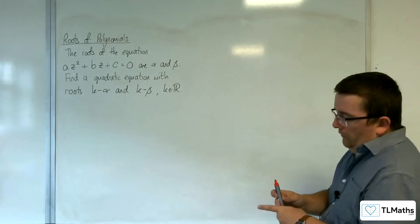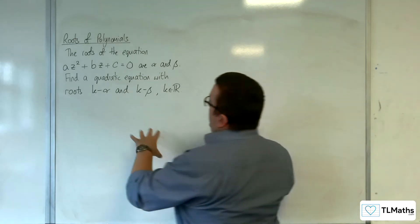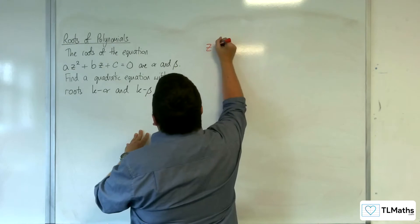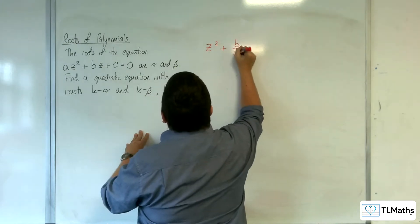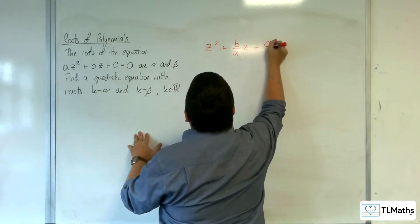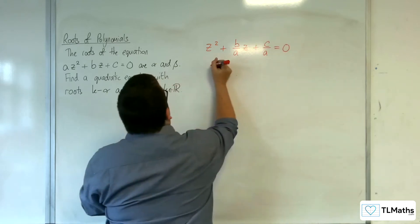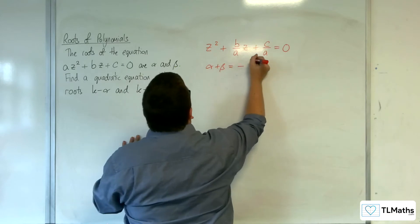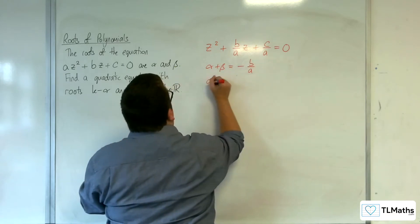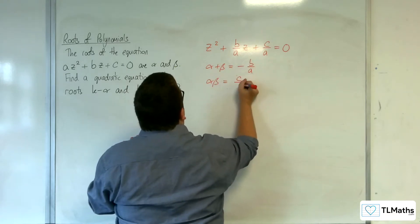Okay, first thing to do is I'm going to divide through by a. So z squared plus b over az plus c over a equals 0. So that alpha plus beta, the sum of the roots, is minus b over a and the product of the roots is c over a.